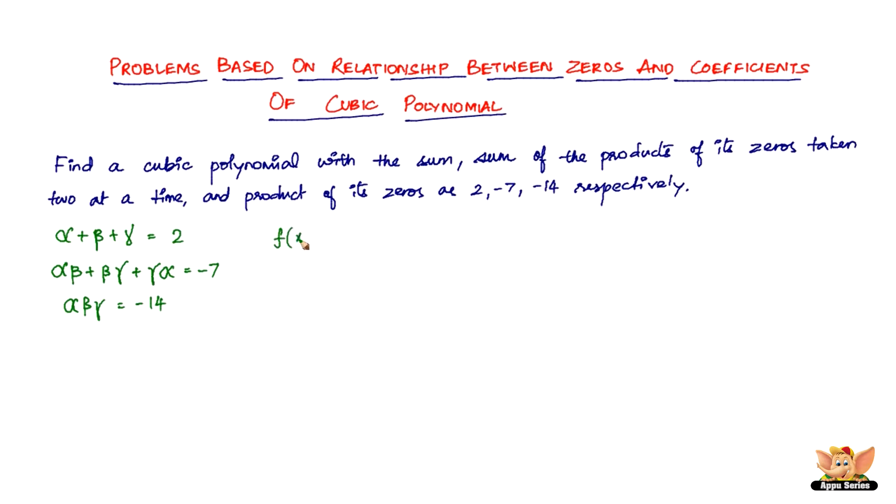Here the formula is: f(x) = K(x³ - (α + β + γ)x² + (αβ + βγ + γα)x - αβγ), where K is a constant.